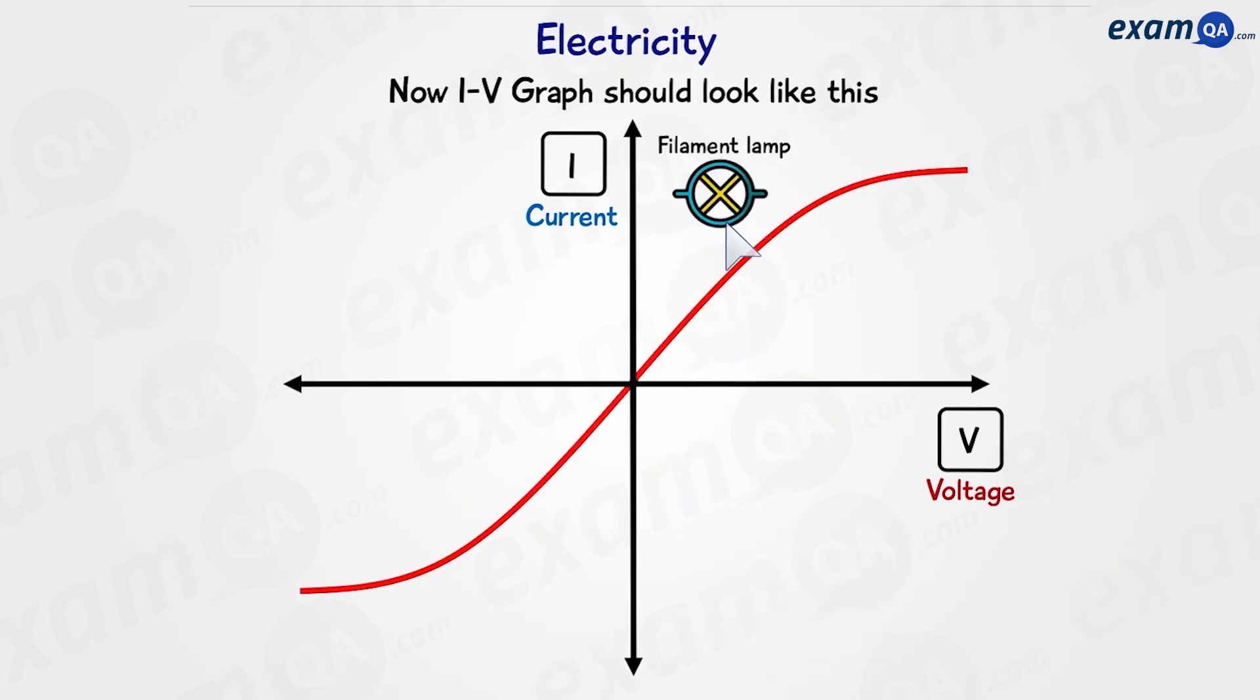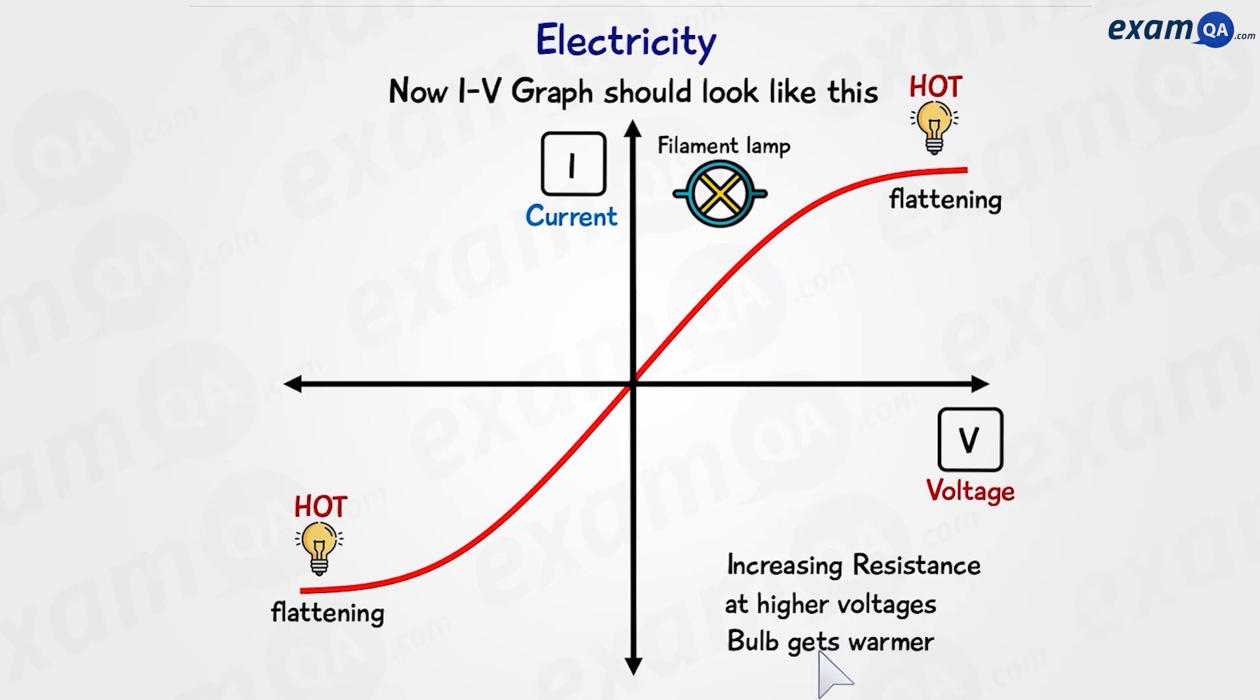For the filament lamp, again, we get these values. It's showing us that our high voltages from both directions is flattening. Therefore, the resistance is increasing at higher voltages, and this is because the bulb is getting warmer.